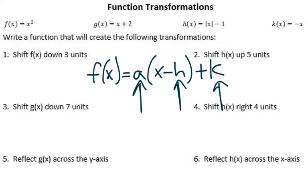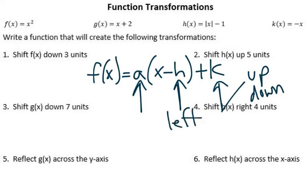The K shifted it up or down — positive was up, negative was down. The H shifted it left or right, and it was the opposite. So a plus H would move it left, a minus H would move it right. The reason for that is because that equation has a minus, so you have to think opposite.